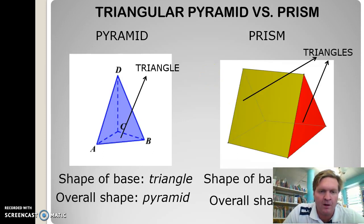Let's have a look at the triangular pyramid versus the prism. What we can see here is there a polygon as a base? Yes, there is. What shape is that? Well, it's a triangle.